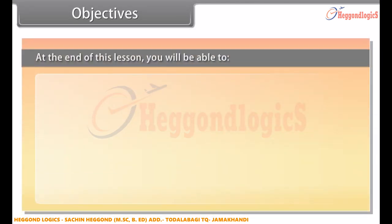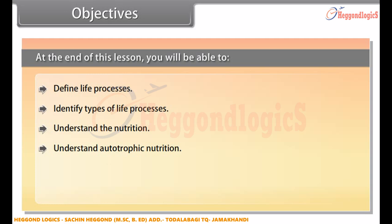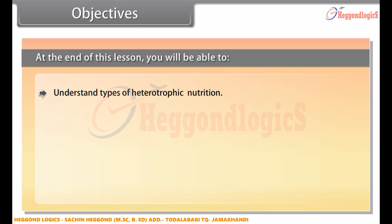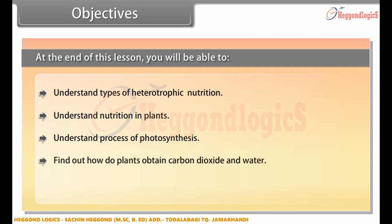At the end of this lesson you will be able to: define life processes, identify types of life processes, understand nutrition, understand autotrophic nutrition, understand heterotrophic nutrition, find the types of heterotrophic nutrition, understand nutrition in plants, understand the process of photosynthesis, find out how plants obtain carbon dioxide and water, and understand the significance of photosynthesis.